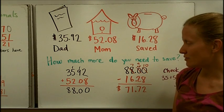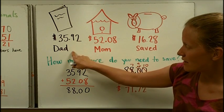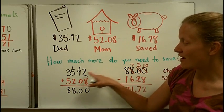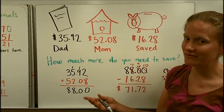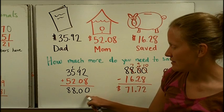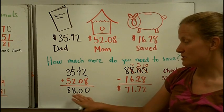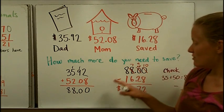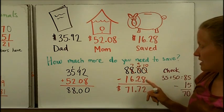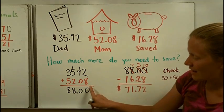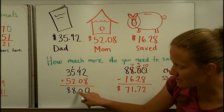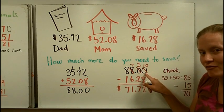We've done this problem here. Let's walk through the steps. We added up the price of what you were going to spend on your dad and your mom. $35.92 plus $52.08. When I added those up, I got $88. This is the total price of what you need to save. Then you can take away what you've already saved.